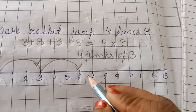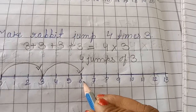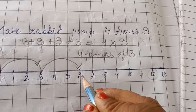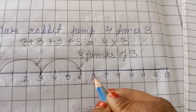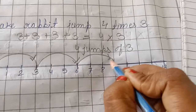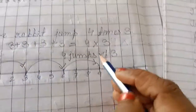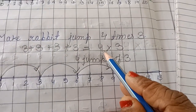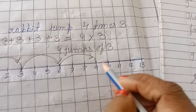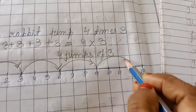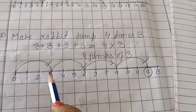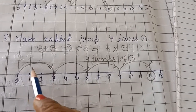Then take one more third jump. We will count after 6: 1, 2, 3. So in the third jump it will reach to 9. And since the rabbit has to take 4 jumps, let's take one more jump: 1, 2, 3. So in the fourth jump it will reach to 12.